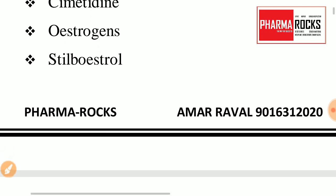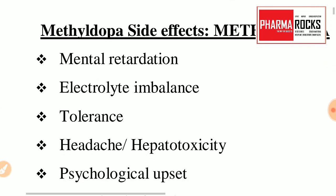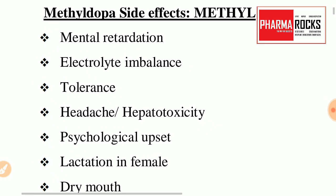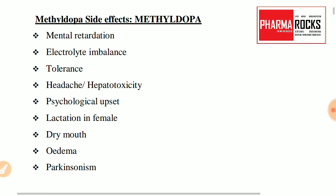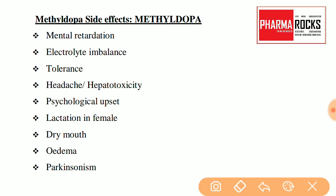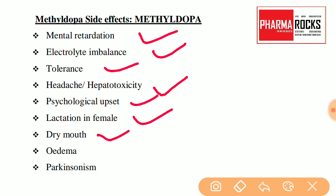Next is methyldopa side effects. For methyldopa side effects, you remember the word METHYLDOPA itself. M — mental retardation, E — electrolyte imbalance, T — tolerance, H — headache and hepatotoxicity, Y — psychological upset, L — lactation in a female, D — dry mouth, O — edema, P — Parkinsonism, A — additional. Writing this sequence in exams will also get you good marks.